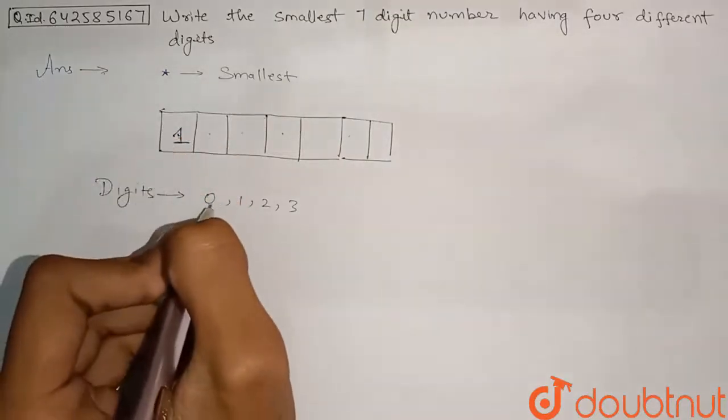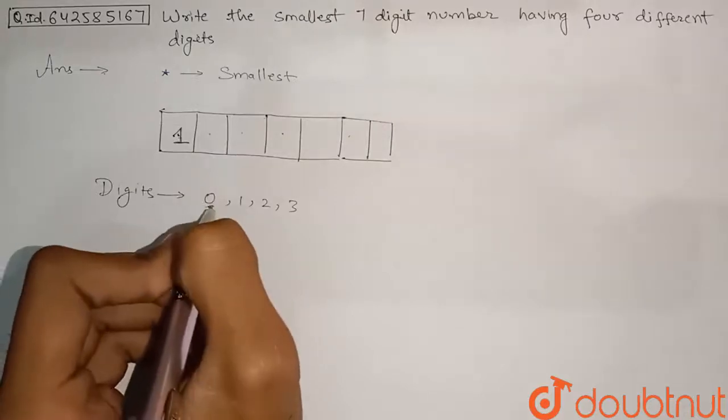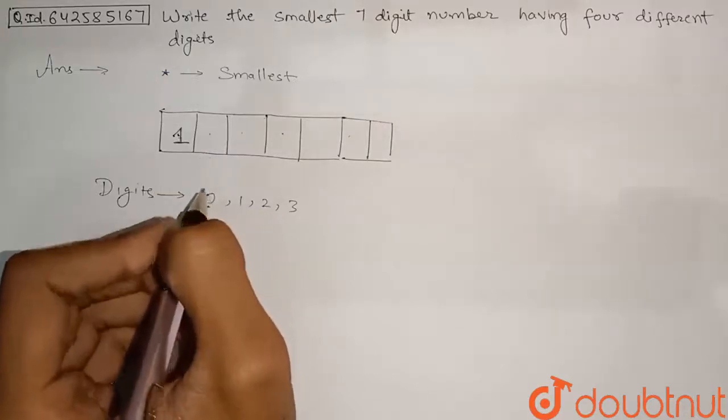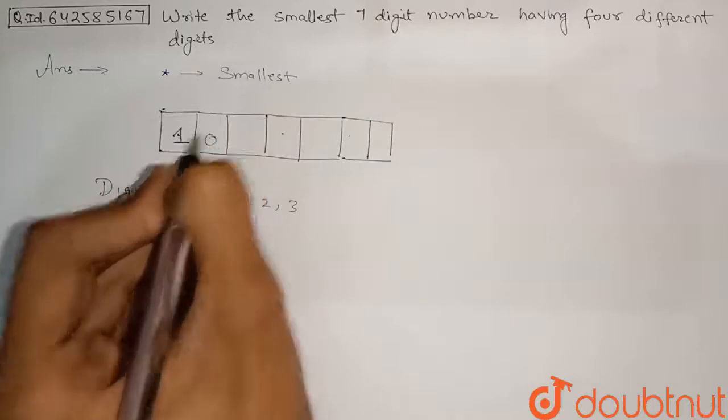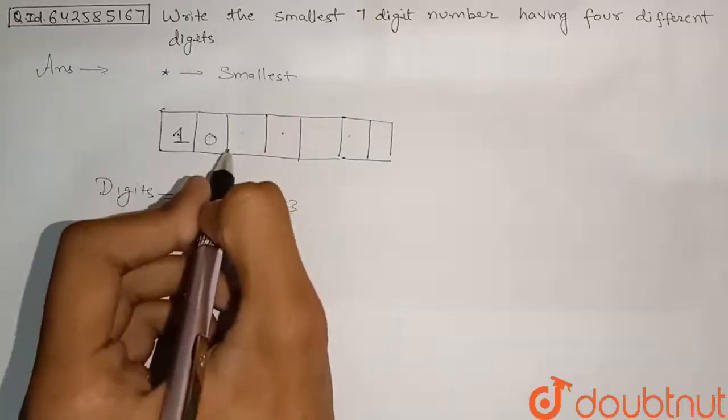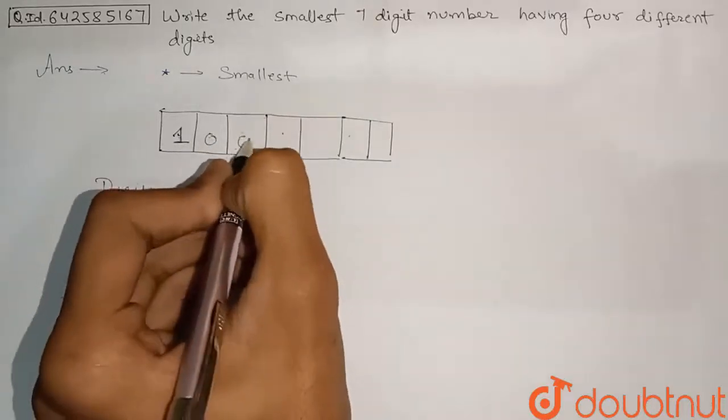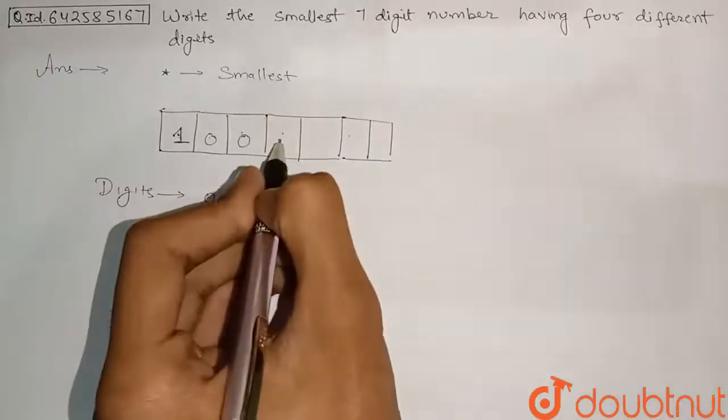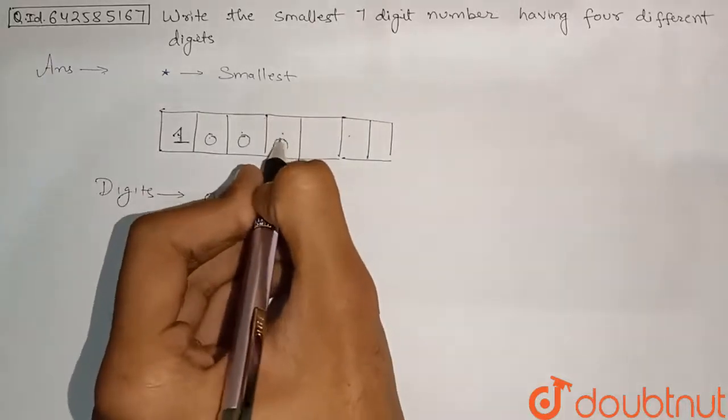But now we can just repeat this 0. This 0 can be repeated because we have to just make a smallest number. So we can write 0 here, and again we can repeat the 0. So this 0 can be repeated, this 0 can be repeated again also, so this 0 can be repeated, and here also this 0 can be repeated.